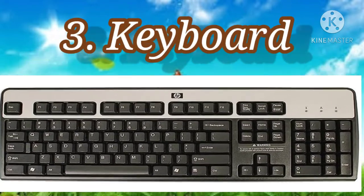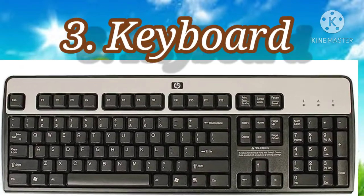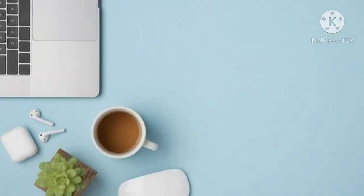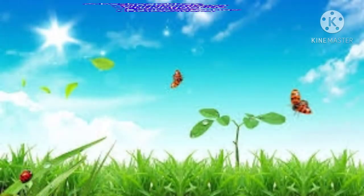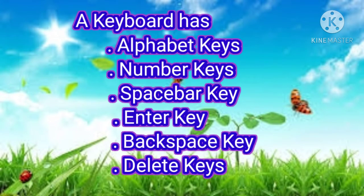Number three is keyboard. A keyboard has many buttons called keys. Keyboard has different kinds of keys. These keys are used to type numbers, letters, and other symbols. A keyboard has alphabet keys, number keys, spacebar key, enter key, backspace key, and delete key.